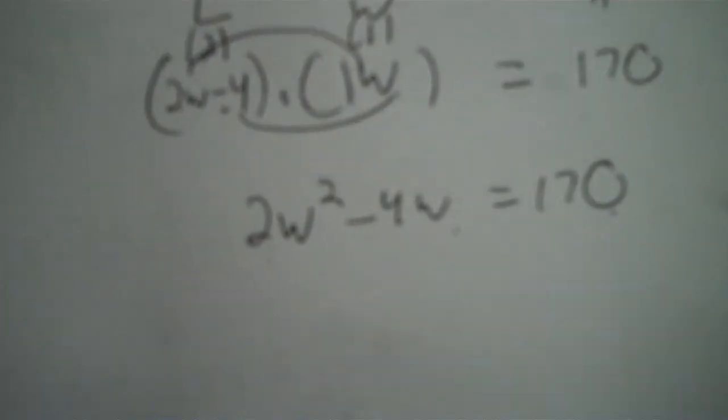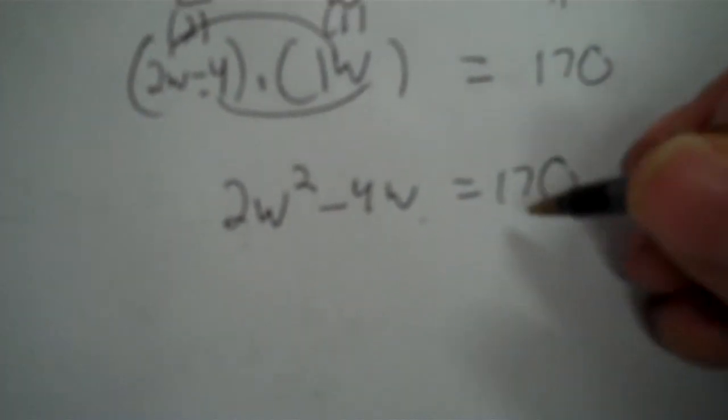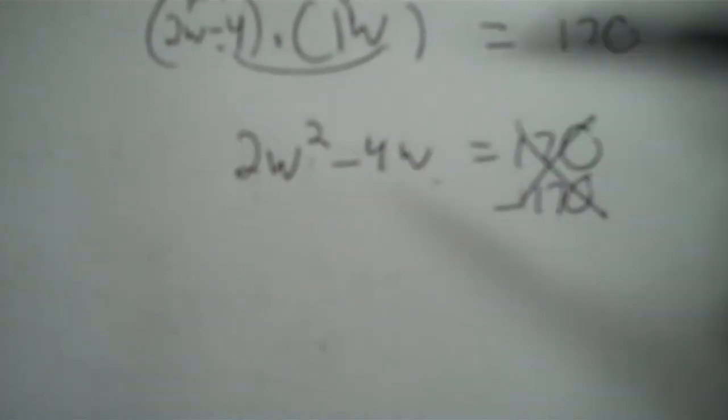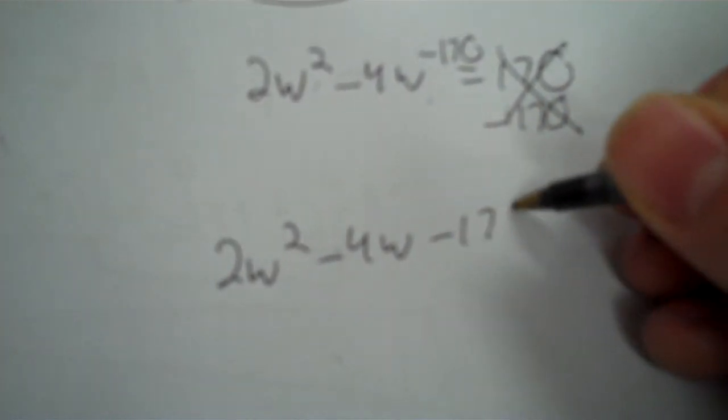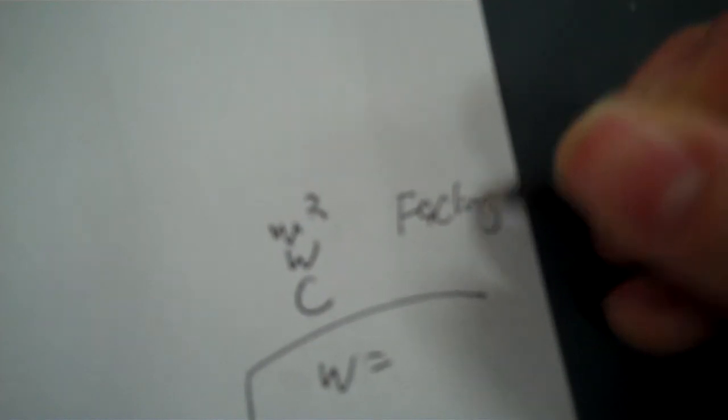So: 2W squared minus 4W equals 170. W is to the second power, so it's got two roots. You have W squared, W to the first, and a constant — three terms. You need to move everything to one side. 170 doesn't have a variable; both other terms are multiplied by variables, so you put 170 at the end: 2W squared minus 4W minus 170 equals zero. Whenever the variable is to different powers, clear one side and use your factoring. Equals zero, then factor.